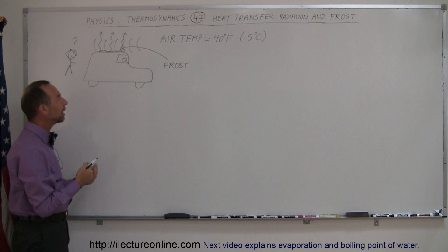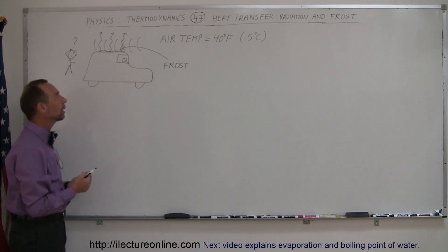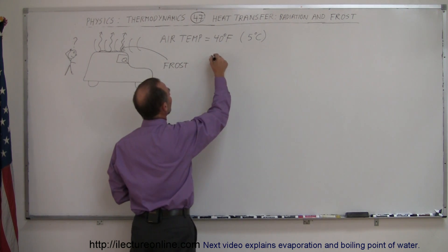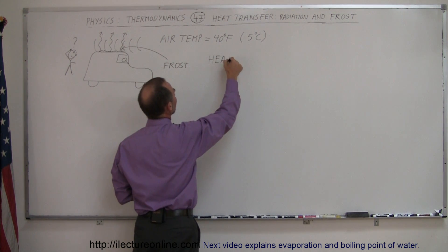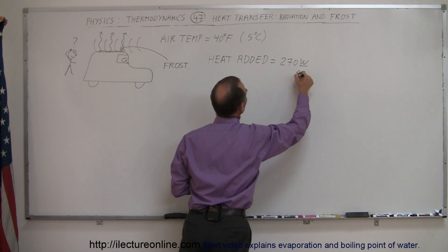But if the net balance is such that more heat escapes than arrives through the convection currents from the air, then the temperature of the car will continue to go down. Let's say that the heat added by the convection currents is equal to 270 watts per square meter.